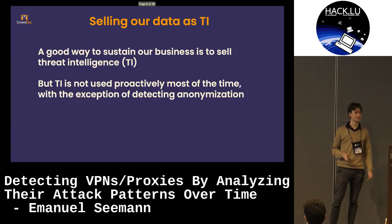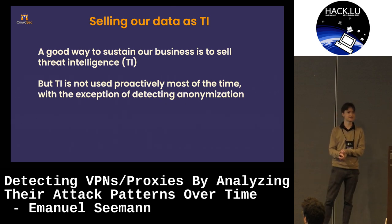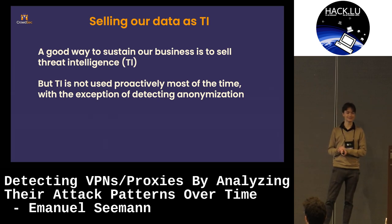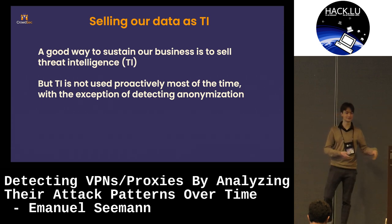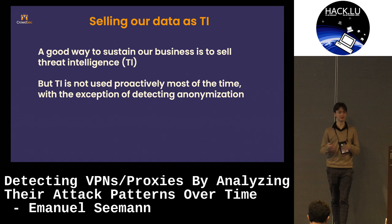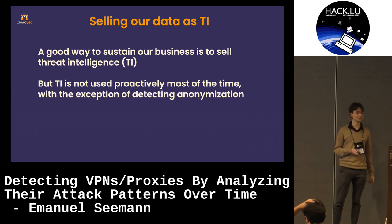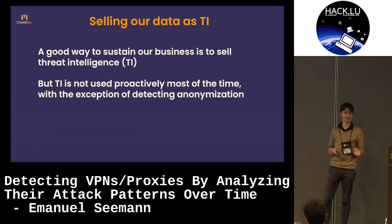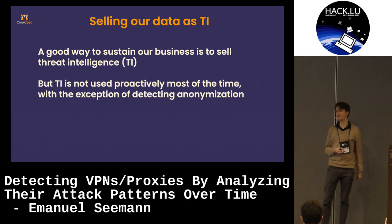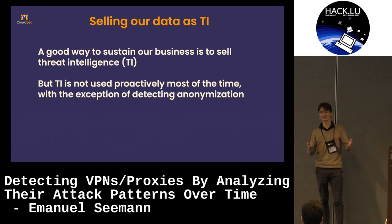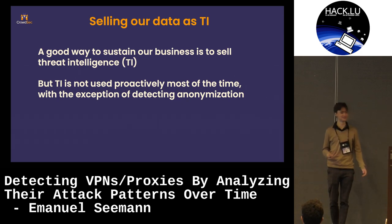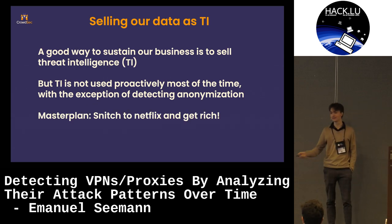We sustain our business by selling threat intelligence data, but a big problem is that threat intelligence is not used proactively most of the time. Usually there's an incident and then you buy IP data to review your logs. A proactive use case is detecting anonymization — VPNs, proxies — because it's interesting for, say, Netflix to know you're not actually American and just accessing a bigger supply of TV series. The massive plan is to snitch to Netflix and get very rich.